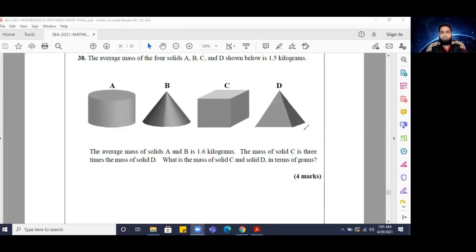The average mass of solids A and B is 1.6 kilograms. The mass of solid C is three times the mass of solid D. What is the mass of solid C and solid D in terms of grams?